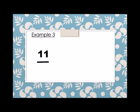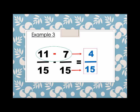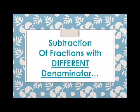Another example. 11 over 15 minus 7 over 15. Again, same denominator. Therefore, the denominator of the answer is 15. And then the numerator, we simply subtract. 11 minus 7 is 4. Therefore, 11 over 15 minus 7 over 15 is equals to 4 over 15.